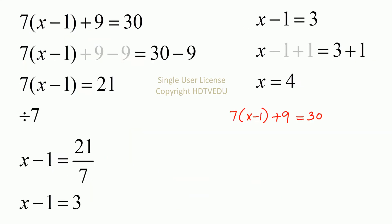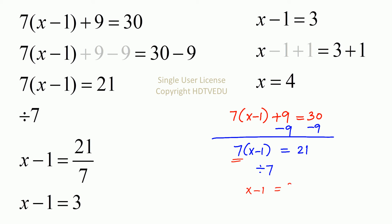Let's use another approach that is a little more user-friendly for us. 7 times x minus 1 plus 9 is equal to 30. Immediately we see that we can subtract 9 from both sides. So 7 times x minus 1 is equal to — what is 30 minus 9? 21. Now divide both sides by 7. x minus 1 is equal to 21 over 7, or x minus 1 is equal to 3. Now add 1 to both sides — x is equal to 4.